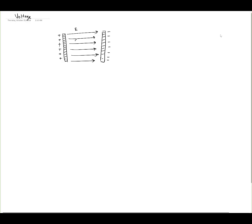If you take a positively charged particle and place it inside this electrical field, then this charge would have a tendency to move in the direction from higher potential energy to lower potential energy. Because the electrical potential field is pointing from left to right, or from point A to point B, we can safely say that the electrical potential energy at point A is more than at point B.